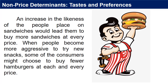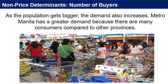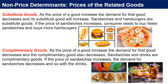An increase in people's likeness for sandwiches would lead them to buy more at every price. When people become more eager to try new snacks, some consumers might choose to buy fewer sandwiches. As the population gets bigger, demand also increases — Metro Manila has greater demand because there are more consumers. For substitute goods: as the price of a good increases, demand for that good decreases and demand for its substitute increases. Sandwiches and hamburgers are substitutes — if the price of sandwiches increases, consumers buy fewer sandwiches and more hamburgers. For complementary goods: as the price of a good increases, demand for that good and its complement both decrease. Sandwiches and drinks are complementary goods — if the price of sandwiches increases, demand for drinks also decreases.